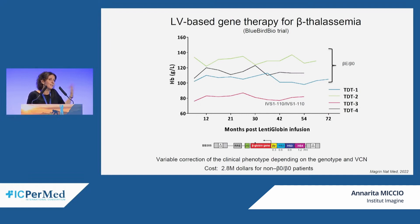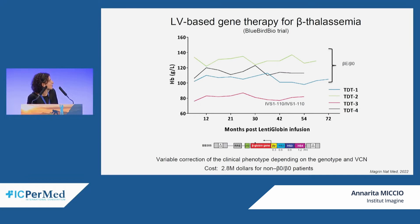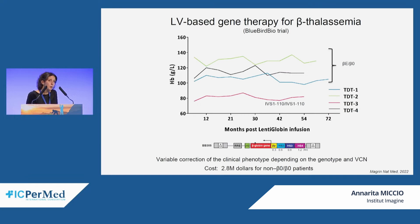This type of therapy is currently on the market — unfortunately only in the US, not in Europe — under the name Zynteglo, at a cost of 2.8 million dollars. However, for patients with a more severe deficit of beta-globin, such as those with the IVS1-110 mutation that strongly downregulates beta-globin, this treatment is not always effective. In such cases the patient had low hemoglobin levels and remained transfusion dependent; we still need to insert a higher number of vector copies to produce more hemoglobin.